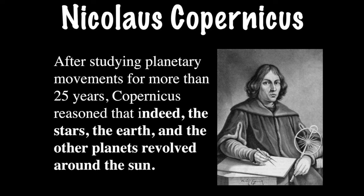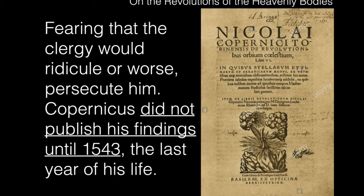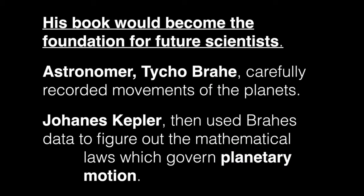Copernicus looked at the stars and the earth and how they revolved, and he noticed that they revolved around the sun, not the earth. Copernicus was a smart man and he knew this concept of heliocentrism — not geocentrism — would be something the church would not be happy about. So instead of publishing it right away, he waited until 1543, his last year of life, and published the information then, so the church did not have time to prosecute him.